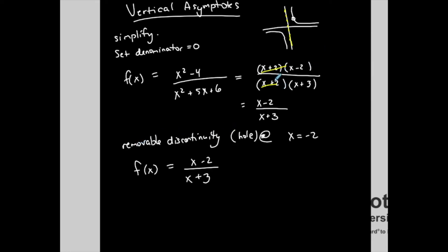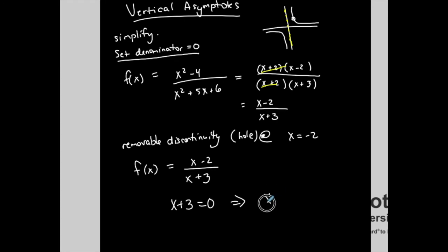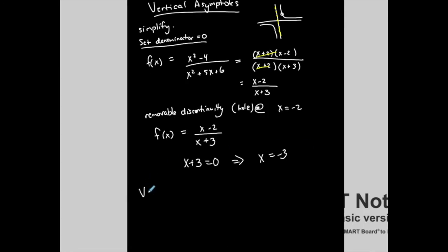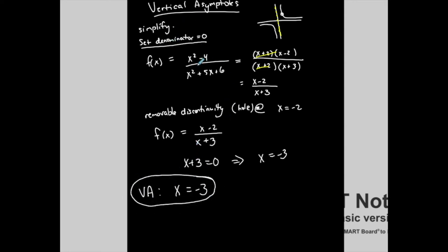So my first step to find vertical asymptotes is to simplify. If something goes away when you simplify, that means you have a hole — a removable discontinuity — at the value that makes it zero. So x plus 2 is not going to give me a vertical asymptote; it gives me a hole. But after simplifying, whatever's left, I set the denominator equal to 0. In this case, x plus 3 equals 0, giving x equals negative 3. That is the equation of the vertical asymptote — a vertical line where the graph never crosses. So the vertical asymptote for this function is at x equals negative 3.